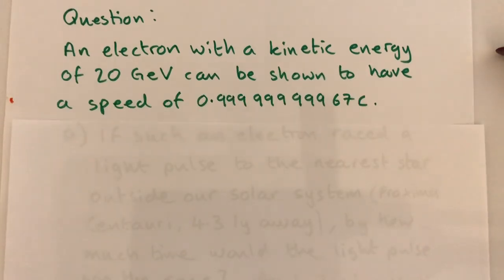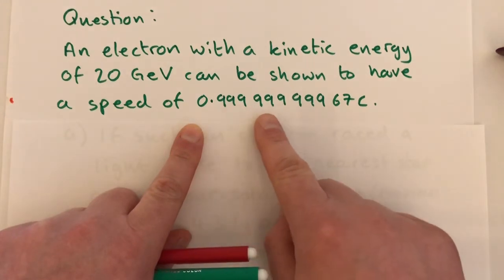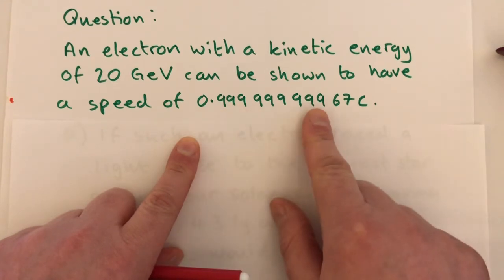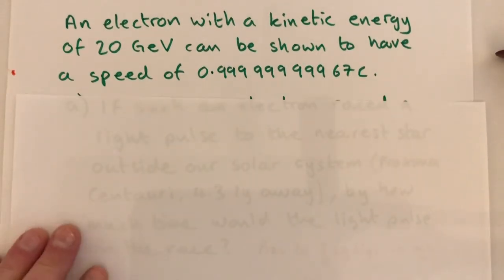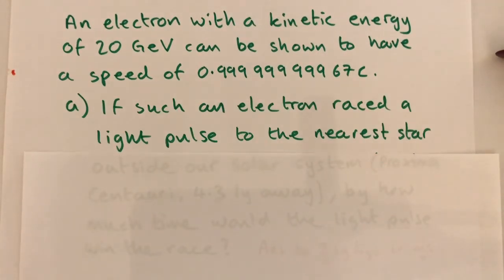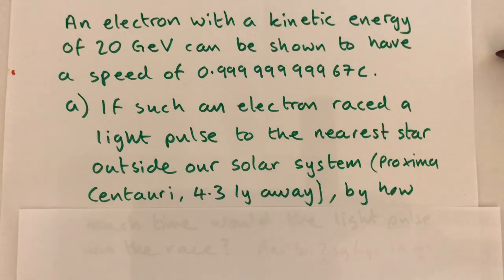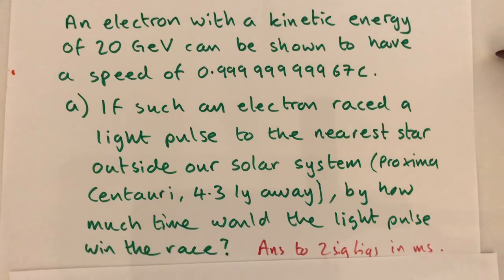An electron with a kinetic energy of 20 giga electron volts can be shown to have a speed of 0.999999999967c. If such an electron raced a light pulse to the nearest star outside of our solar system, called Proxima Centauri, which is a distance of 4.3 light years away, by how much time would the light pulse win the race? Please give your answer to two significant figures and in the units milliseconds.